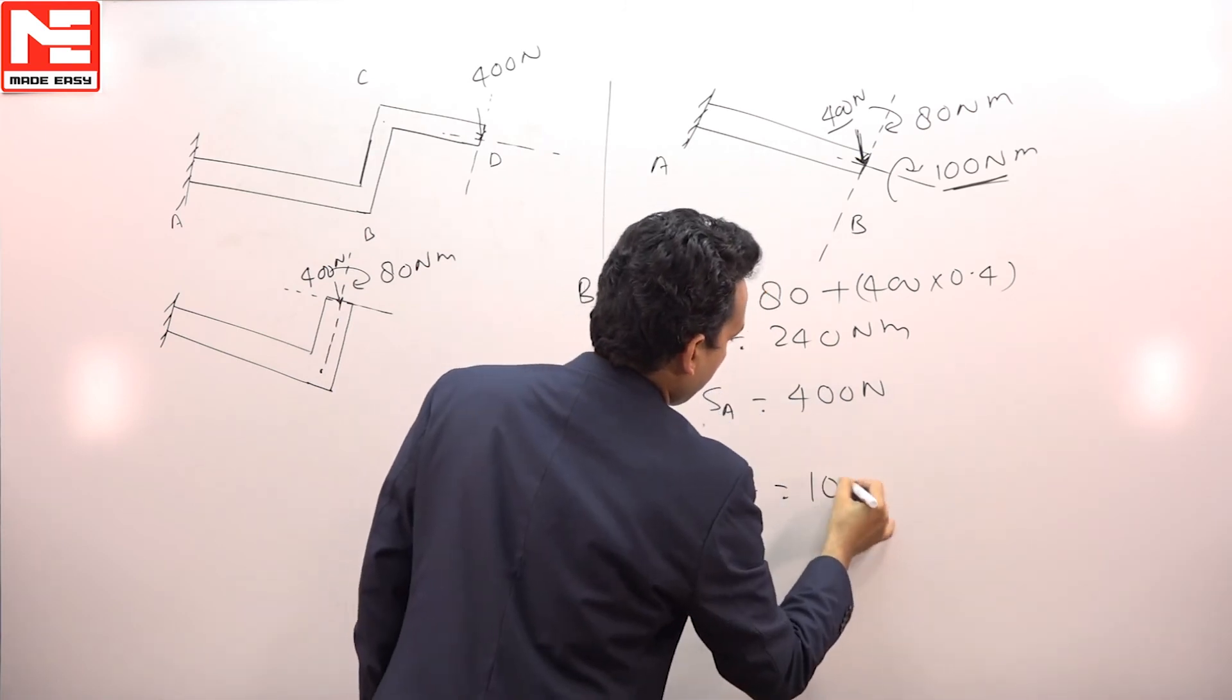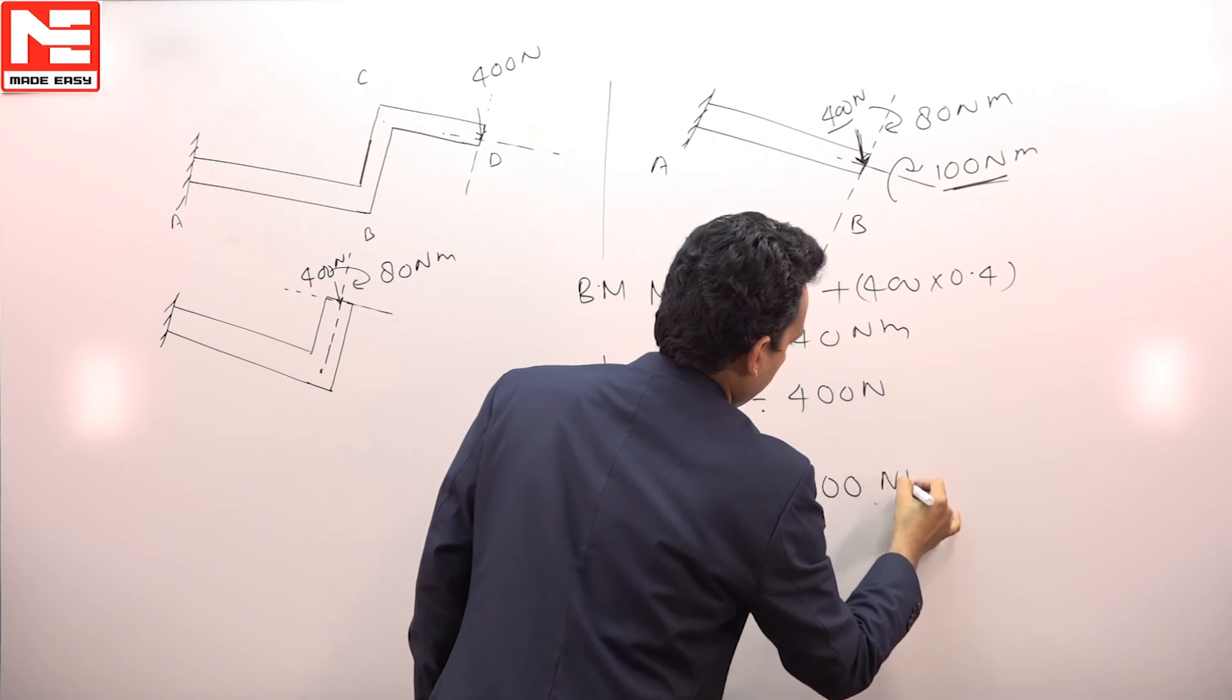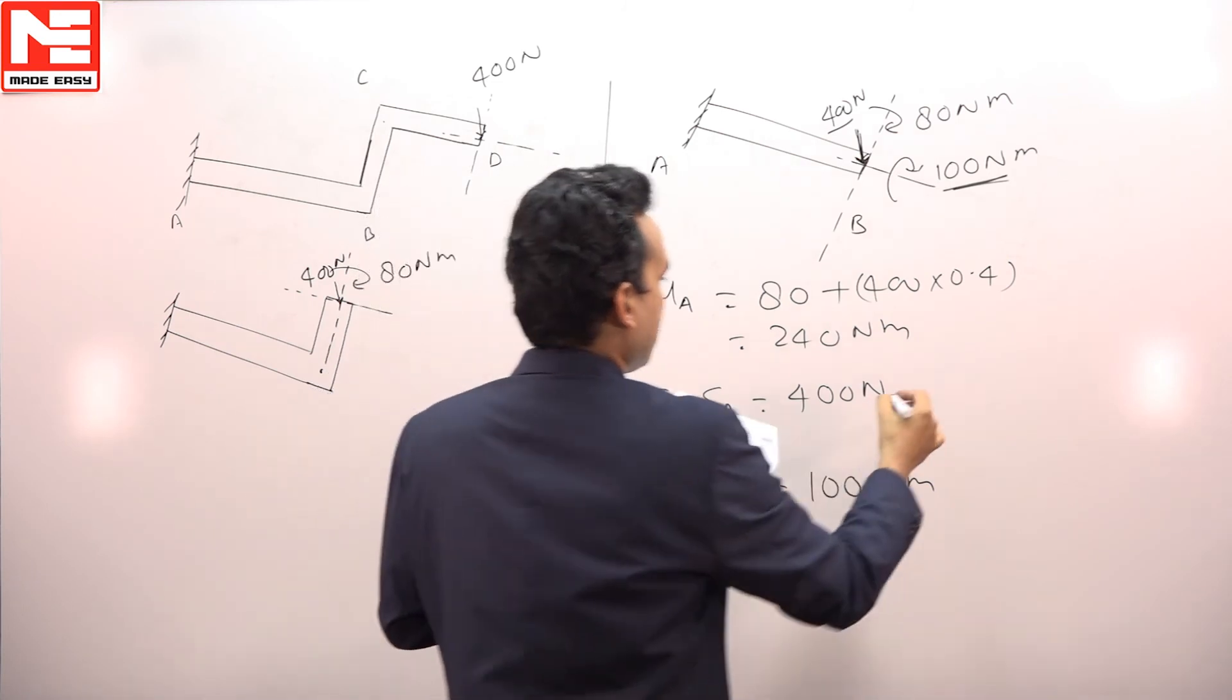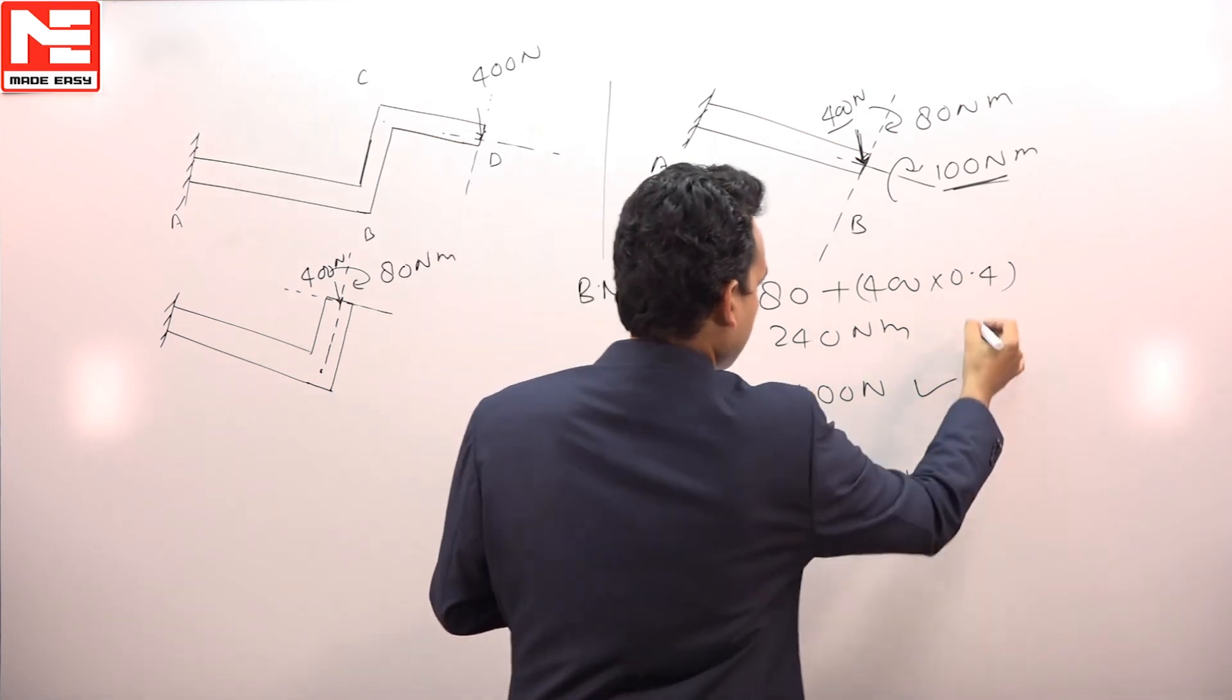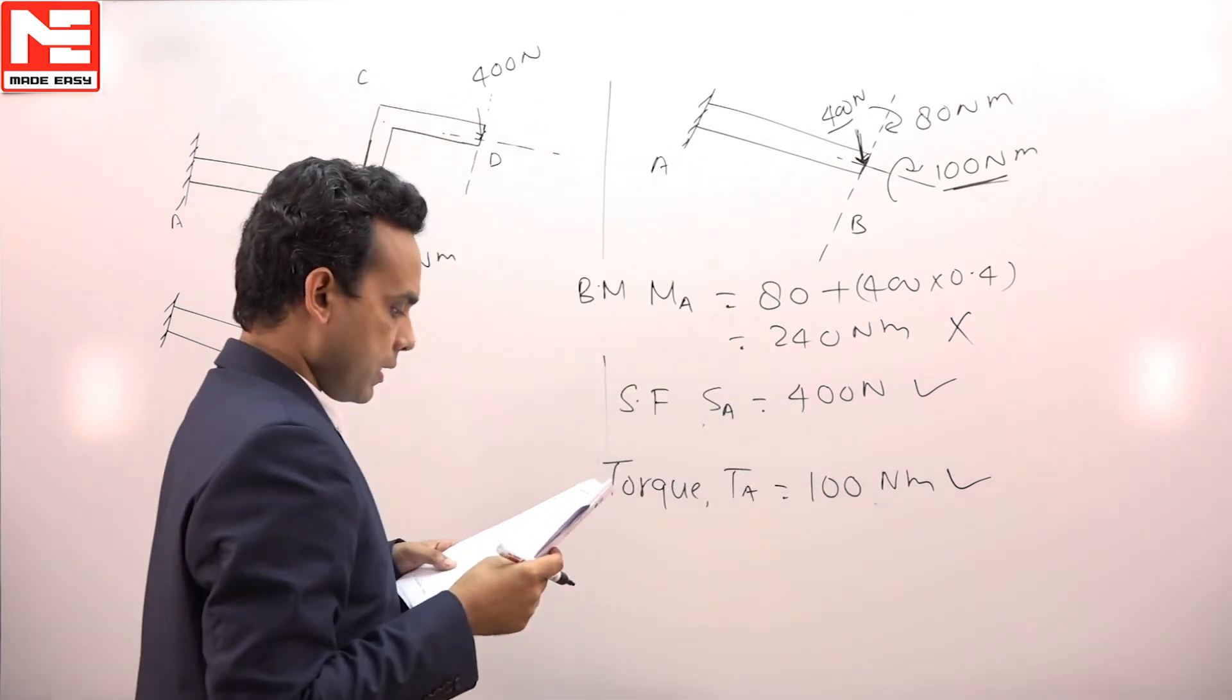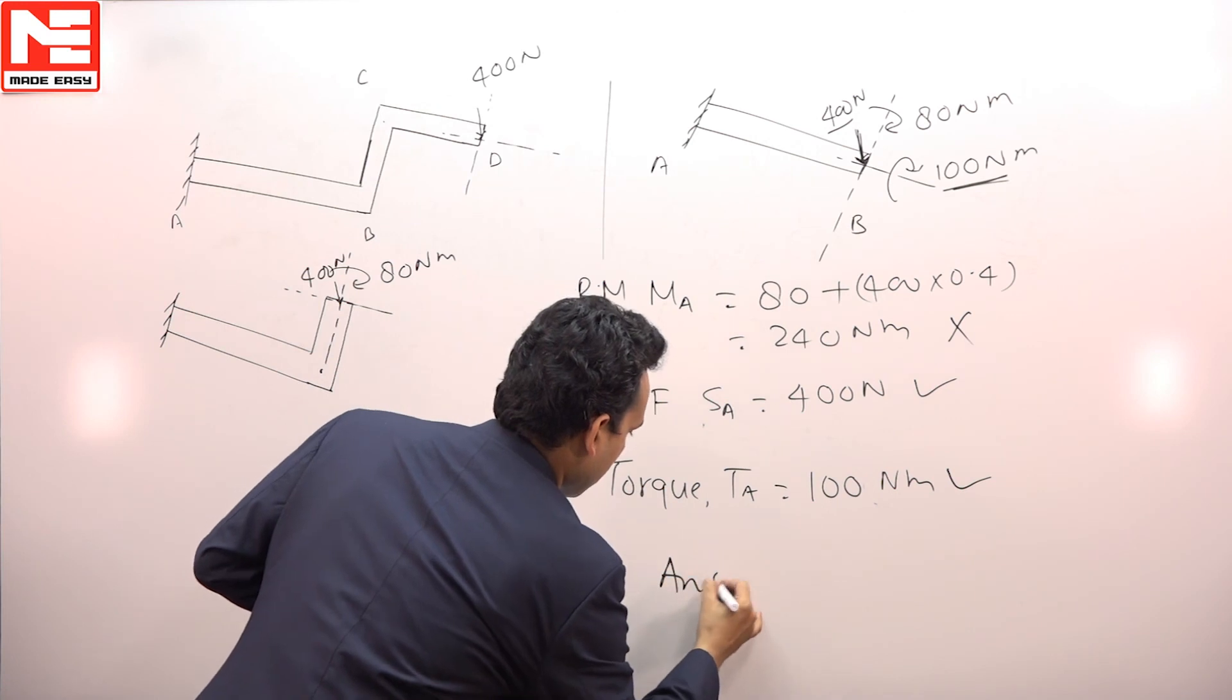Now according to the question, the shear force was 400 Newton, that is correct. Then the bending moment was 340, this one is wrong. Then torque is 100 Newton meter, this one is correct. Shear force and torque are correct, therefore the answer should be D, the last one.